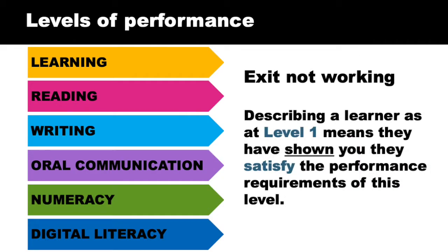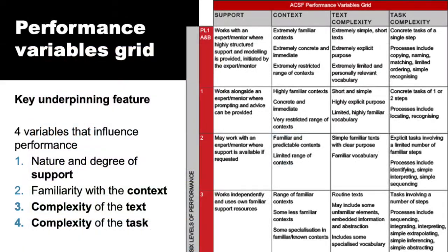The language of the ACSF is exit levels, not working levels. So if a person is described as demonstrating evidence at level one, it means that they've satisfied enough of the variables at level one to be rated at that level. The key underpinning feature of the ACSF is the performance variables grid, the PVG. This recognises four factors that may influence an individual's performance at any point in time across any of the core skills.